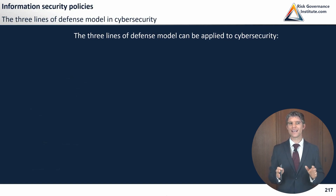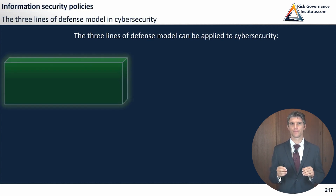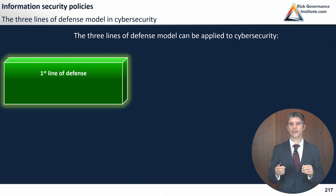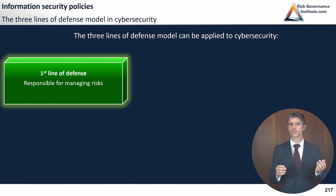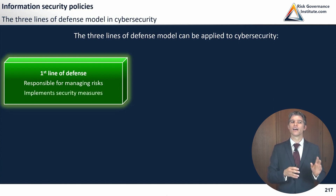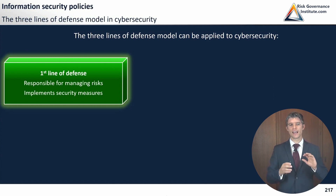We're now going to see how the Three Lines of Defense model can be applied to cybersecurity. You know the model — you have a first line, second line, and third line of defense. The first line of defense is responsible for managing risks. Here we're looking at cybersecurity risks, though this model is applied to much more than just cybersecurity. My examples will focus on cybersecurity, so the first line implements cybersecurity risk measures.